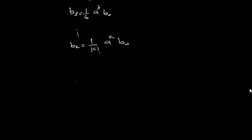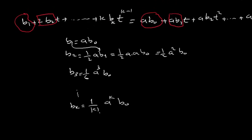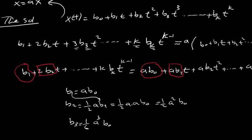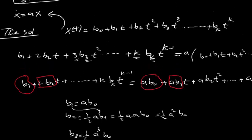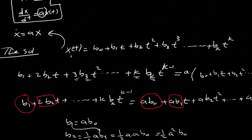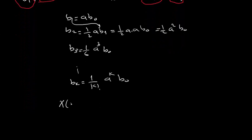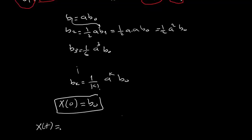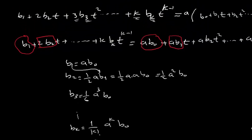Now how to determine b0: from our assumed solution x(t), if we substitute t=0, we get x(0) = b0. So b0 is just the initial condition x0.